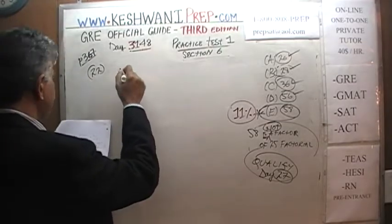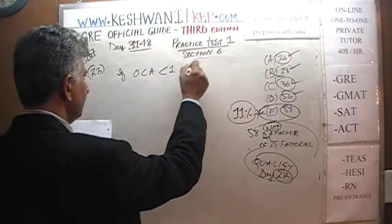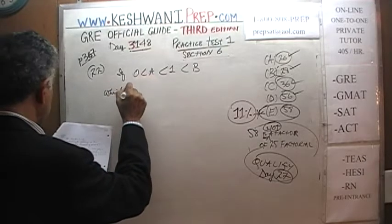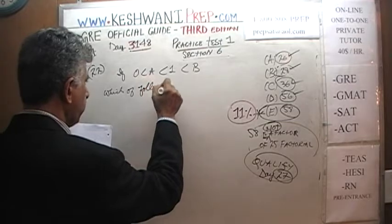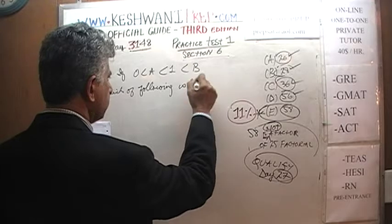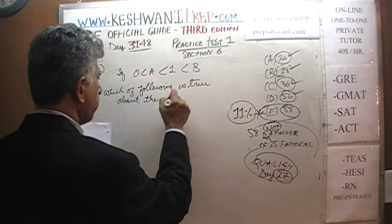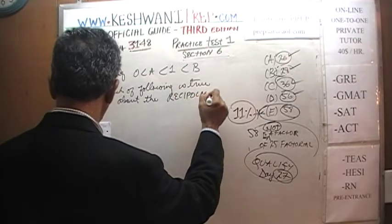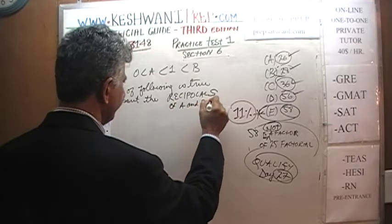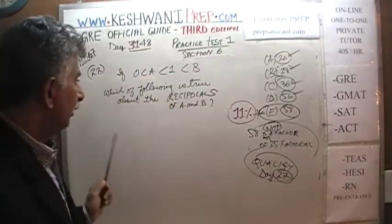Problem 22 says: if 0 is less than A, which in turn is less than 1, which in turn is less than B, which of the following is true about the reciprocals of A and B? First thing we want to understand is what does it mean to be a reciprocal.